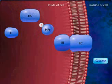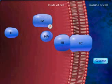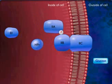The phosphate is then transferred from HPr to Enzyme IIB by Enzyme IIA.